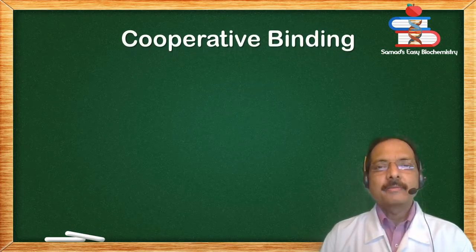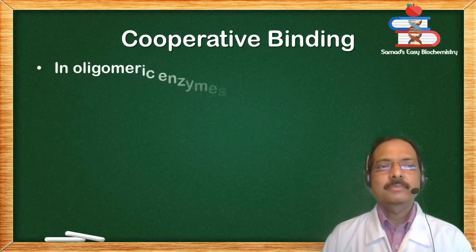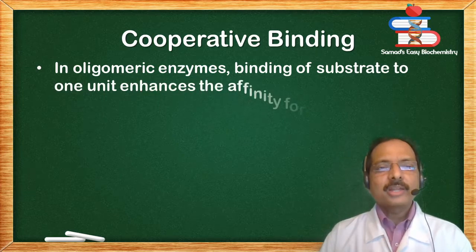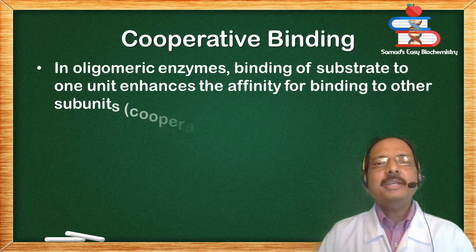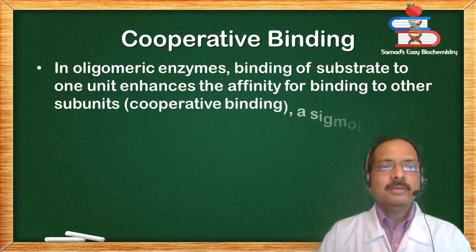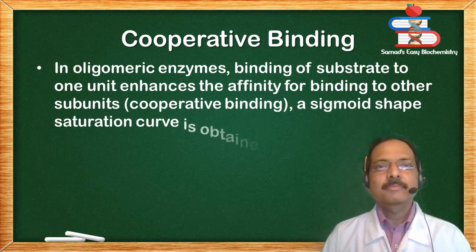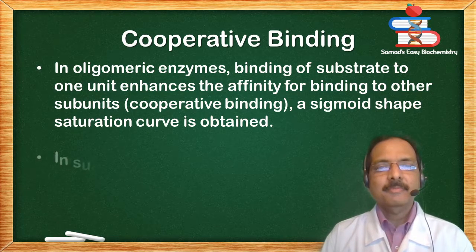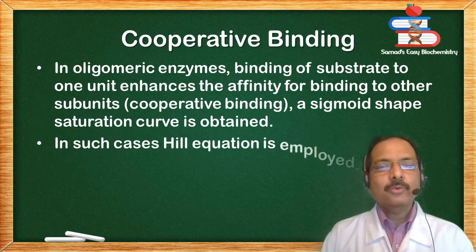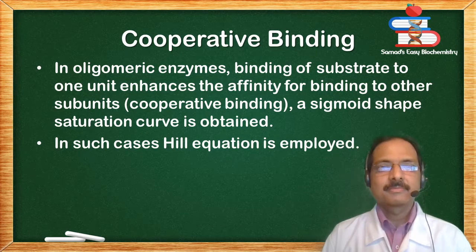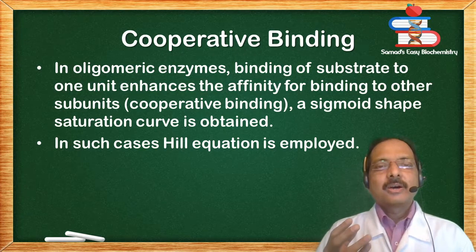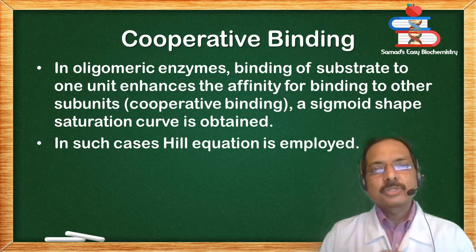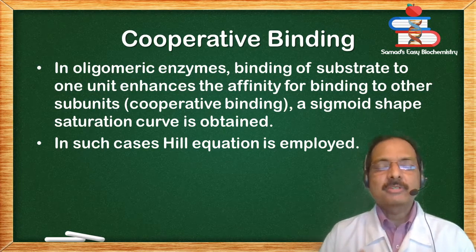Cooperative binding: in oligomeric enzymes, binding of substrate to one subunit enhances the affinity for binding to other subunits. A sigmoid-shaped saturation curve is obtained, and in such cases the Hill equation is employed. Example: the oxygen-hemoglobin dissociation curve, where oxygen shows positive cooperativity in binding to the different subunits of hemoglobin.